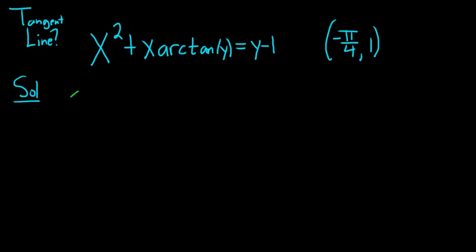So the derivative of x squared is 2x. To take this derivative here we're going to use the product rule. We can think of x as being our first function, f, and arc tan y as being our second function, g.